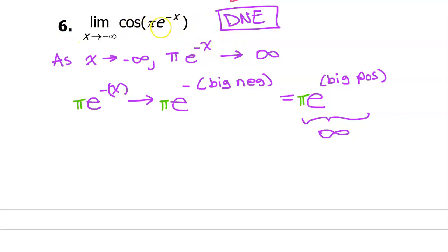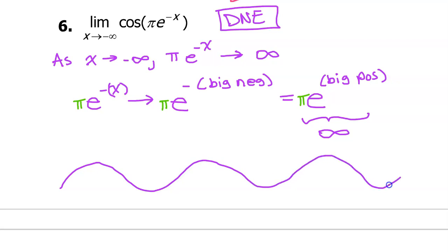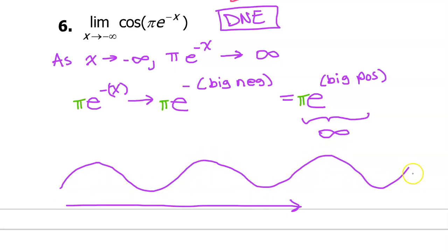If you're trying to find the limit of cosine and the value inside is getting bigger and bigger, that limit does not exist. Cosine is a periodic function that rises and falls between positive 1 and negative 1 forever. As the interior approaches infinity, the value of cosine keeps oscillating up and down between 1 and negative 1 without leveling out at a particular value. That oscillation is another way a limit does not exist.